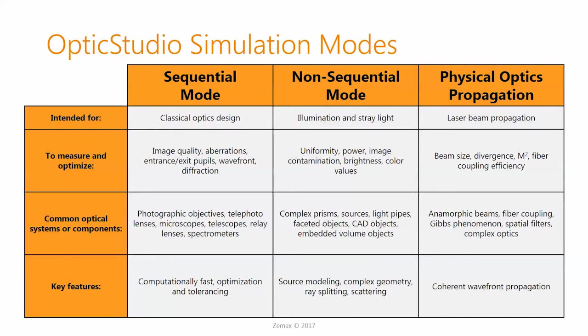This table summarizes the three different modes — you'll have these slides available afterward. Sequential mode is intended for classical optics design and is lightning fast because it makes key assumptions. Non-sequential mode allows rays to take a much more general path, but that means you have to trace more of them. The key thing to look at in this table is the second row: think about what you're going to be measuring and optimizing, then choose your mode based on that.